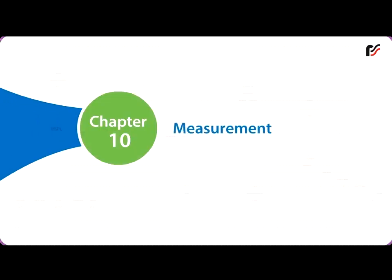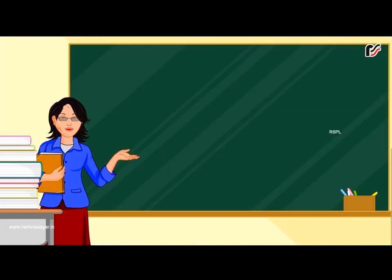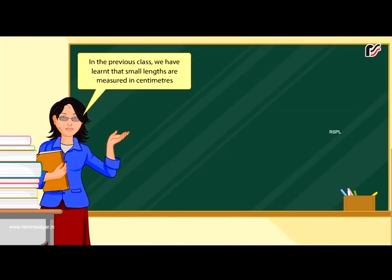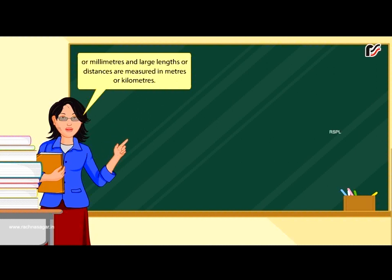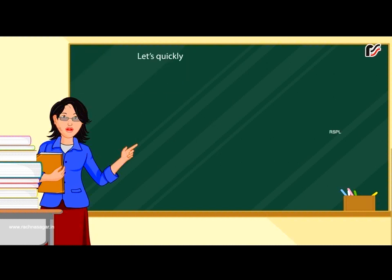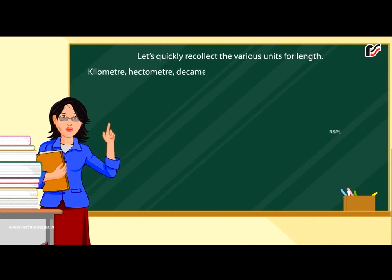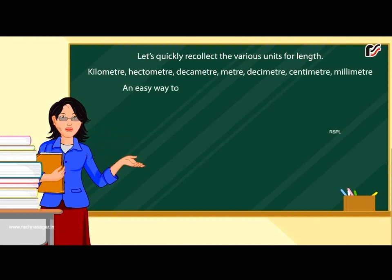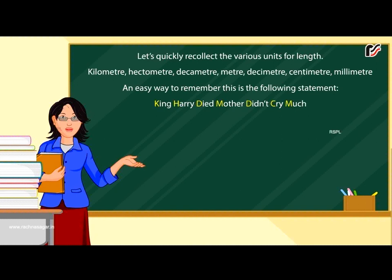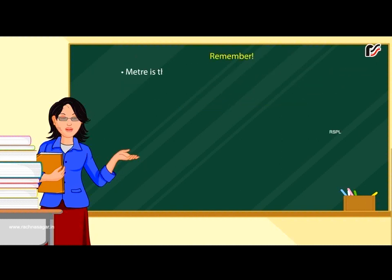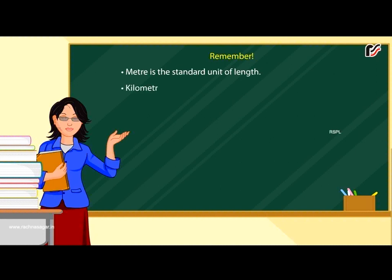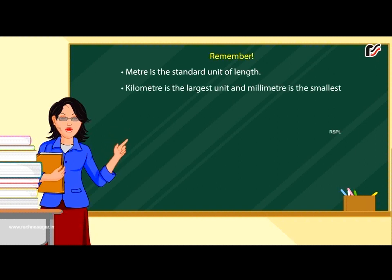Chapter 10: Measurement of Length. In the previous class we learned that small lengths are measured in centimetres or millimetres, and large lengths or distances are measured in metres or kilometres. Let's quickly recollect the various units for length: kilometre, hectometre, decameter, metre, decimetre, centimetre, millimetre. An easy way to remember this is the statement: 'King Harry died, mother didn't cry much.' Remember, metre is the standard unit of length. Kilometre is the largest unit and millimetre is the smallest unit of length.